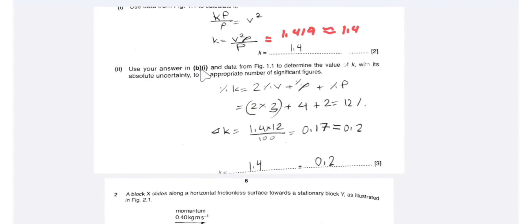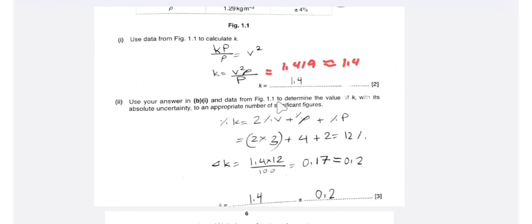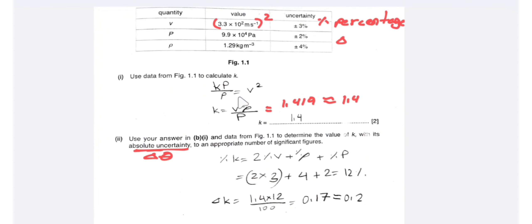Then, using the answer from B1 and the data from figure 1.1, determine the value of k with its absolute uncertainty to an appropriate number of significant figures. We need to find the absolute uncertainty, but in figure 1.1 we have been given the value of percentage uncertainty, so we must convert.